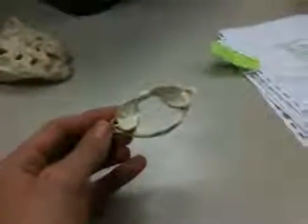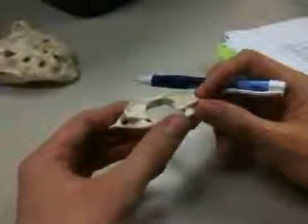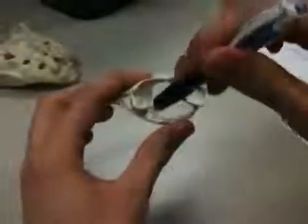We have the transverse foramen, which are the holes right next to the transverse process. And the vertebral foramen, which is the big one right here.